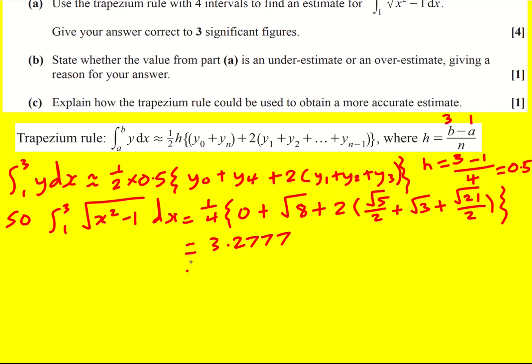So, given that to three significant figures gives 3.28, and that is going to be our estimate.